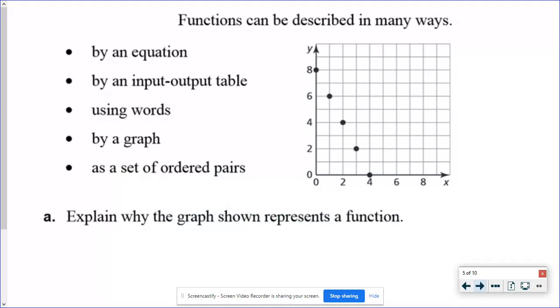So we can take a look at functions in lots of different ways. We can have an equation, input output tables, words, graphs, a set of ordered pairs, and you can see that there's a graph here also on this slide. I want to know why this graph is a function, and again, it's because it passes the vertical line test. If I would draw a vertical line, I could hit one point with that vertical line. If I would draw another vertical line, I might not hit anything at all. So that could happen as well.